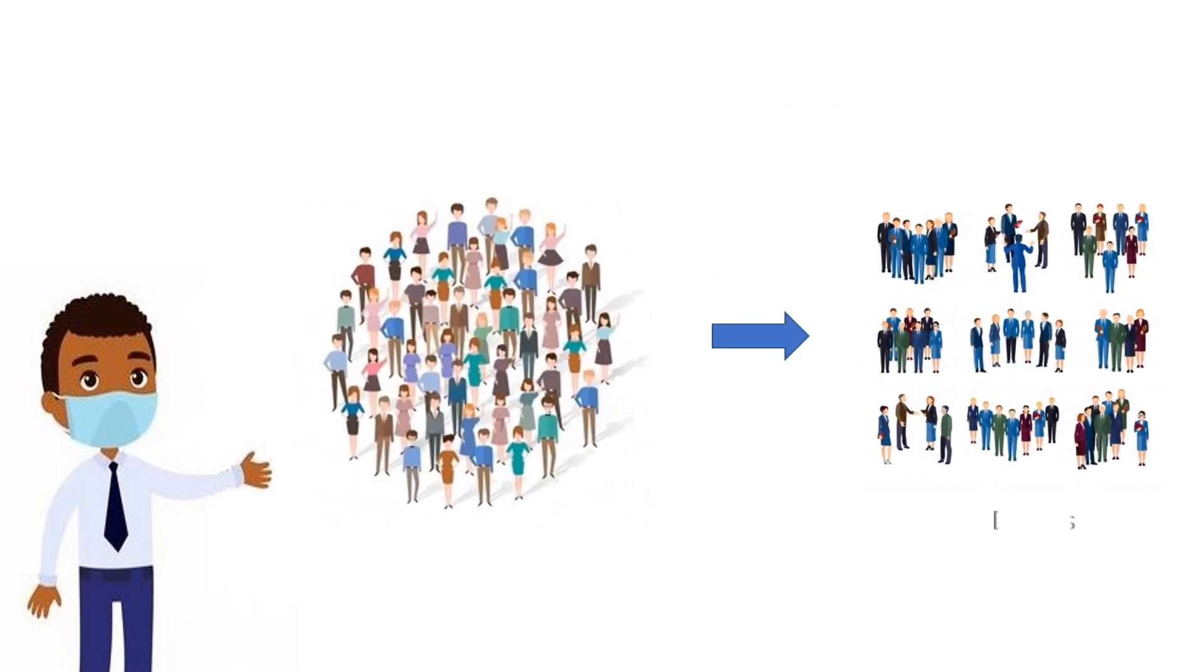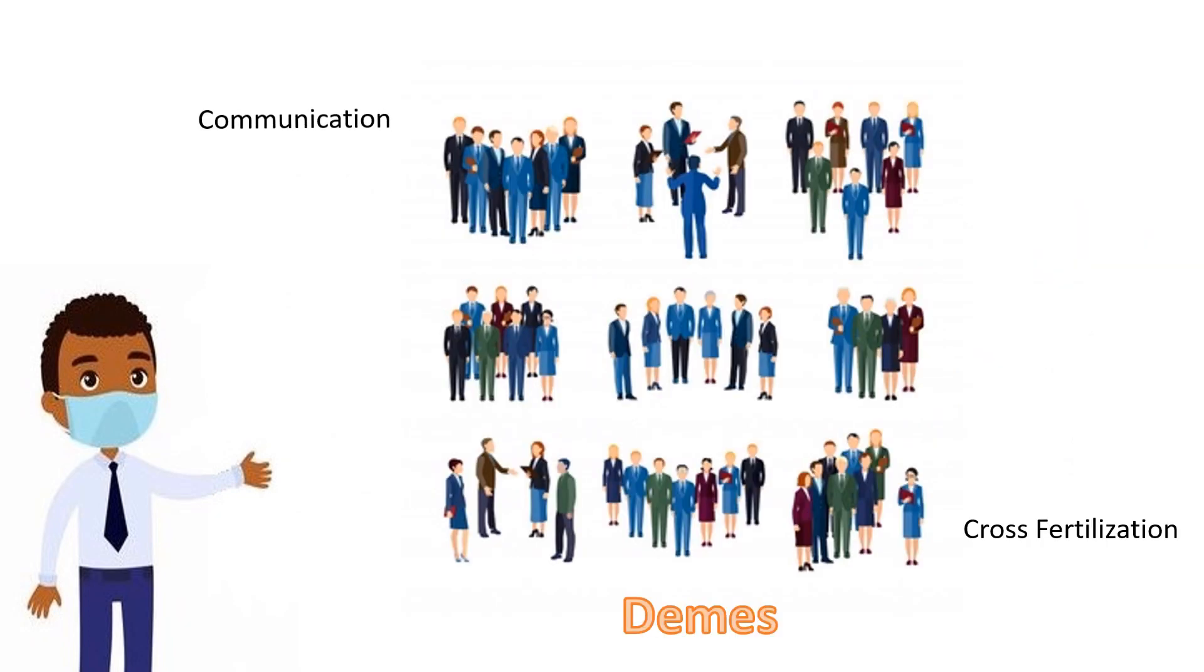The total population is divided into various groups of individuals called demes. Every deme is assigned to a different computational node, and standard genetic algorithm search is performed at different nodes. The communication and cross-fertilization between demes will occur very infrequently.